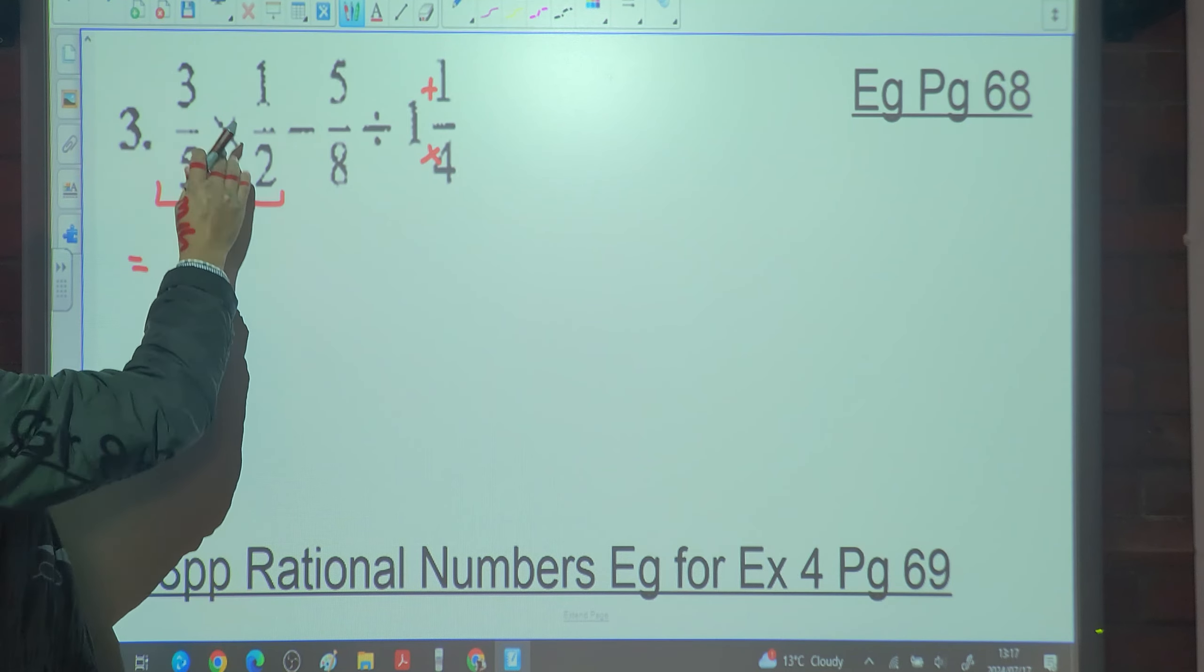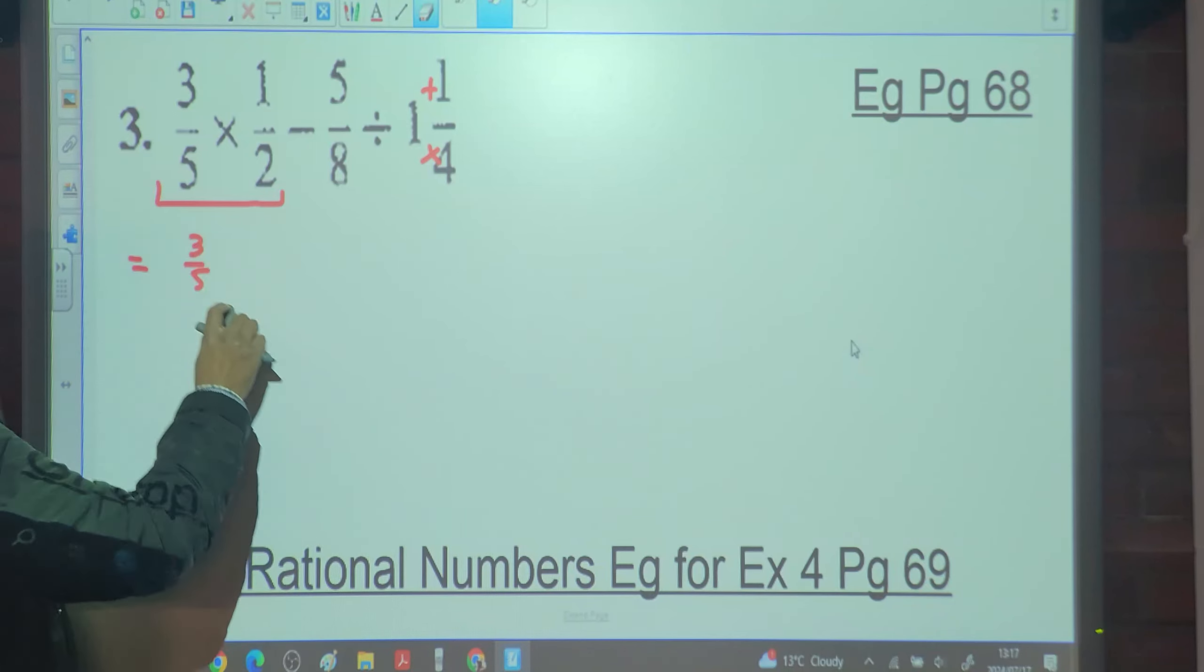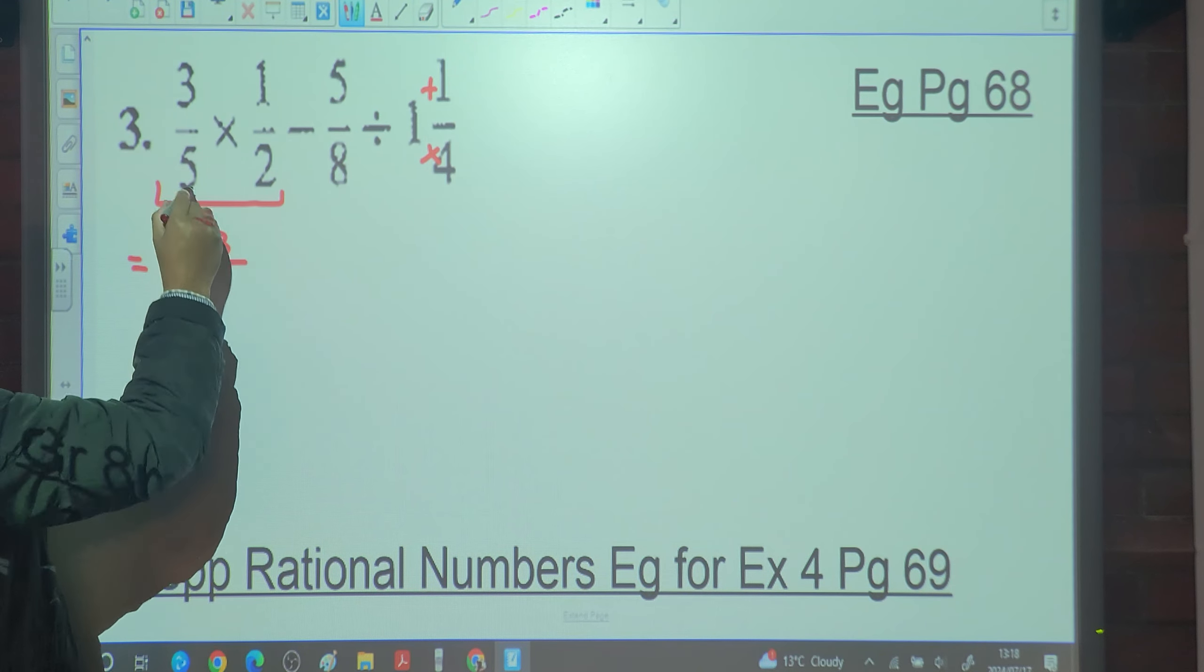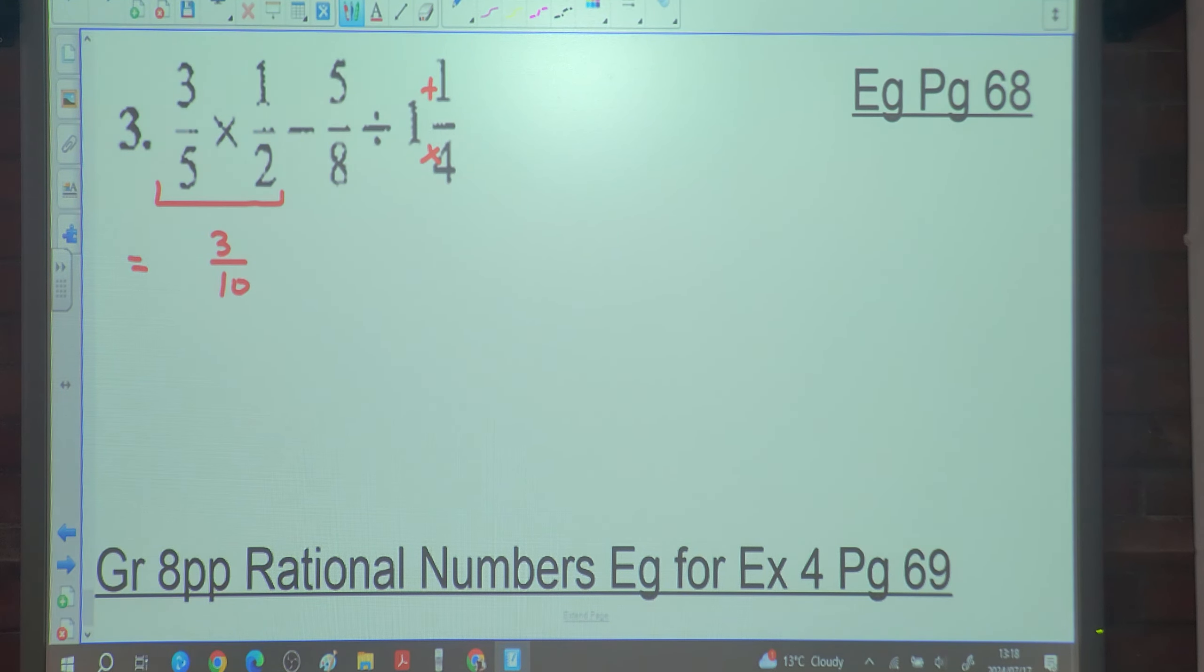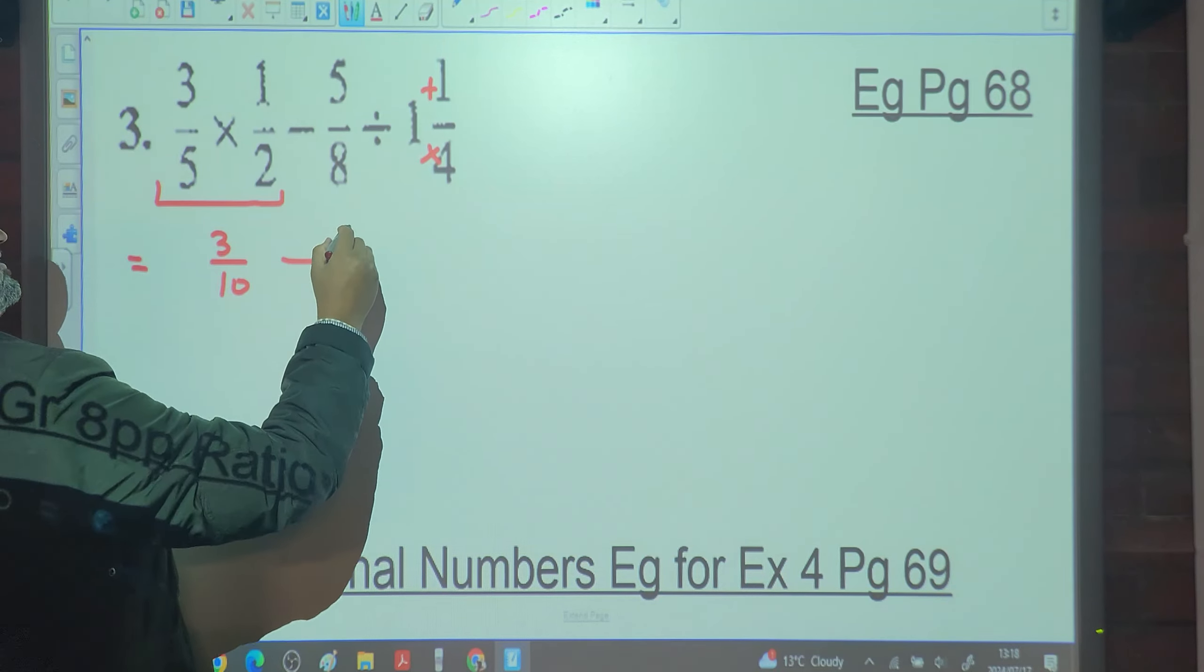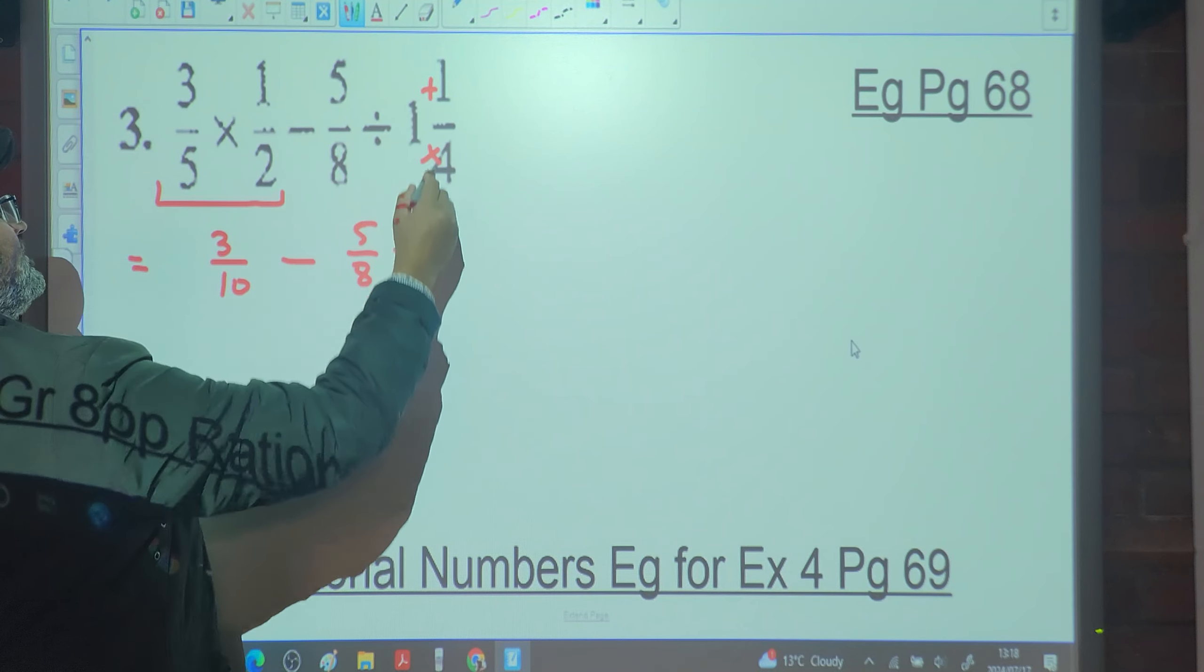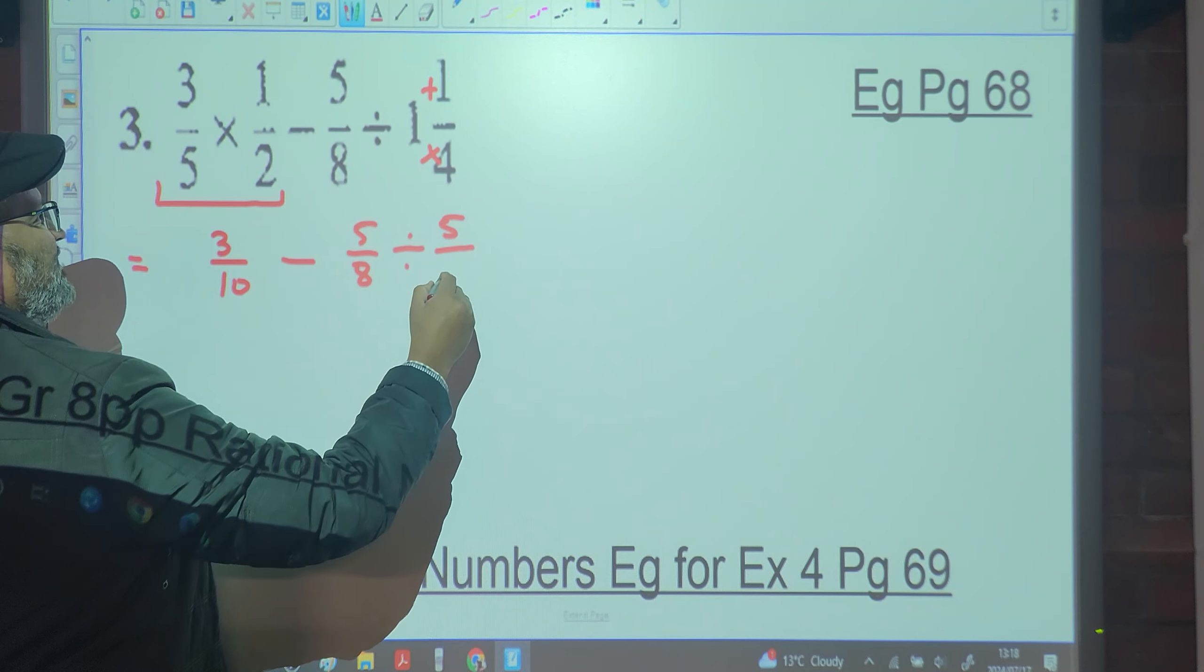It's three over five. Is anything get cancelled here? No. So that's a straight multiplication sum here. One times three is three. Two times five is ten. Minus. This is going to be five over eight divided by one times four is four plus one is five. It's five over four.